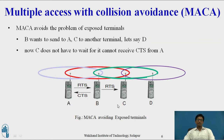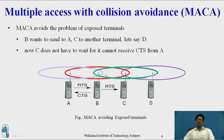Now let us see how MACA avoids collision in the exposed terminal scenario. Here, B wants to send data to A, and C wants to send data to another terminal D. C does not have to wait because it cannot receive a CTS from A. B broadcasts the RTS packet so both A and C receive it. C recognizes there is a transmission going on between A and B, so C does not have to wait unnecessarily and can directly transmit its data to terminal D. In this way, we can avoid the exposed terminal problem using the MACA technique.